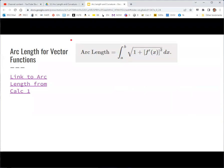You may want to do a little bit of review of arc length from Calc 1. There's a link here to that section of the Calc 1 textbook. The formula that you may have seen is if you had some function f of x, then you could integrate the square root of 1 plus f prime of x squared to get the arc length of that curve.